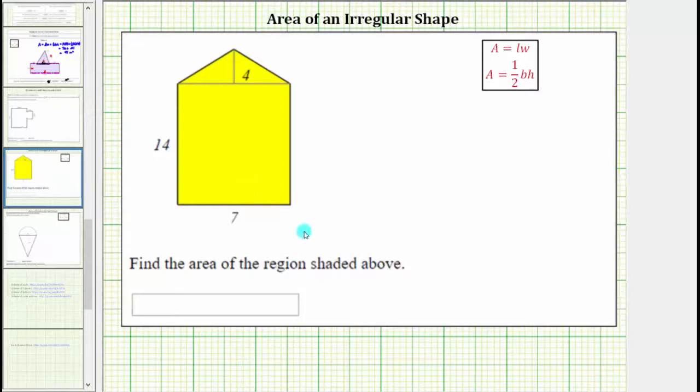We're asked to find the area of the polygon, which because it has five sides is a pentagon. There is no single formula that we can use to find this area, and therefore we will decompose this area in order to find the total area.